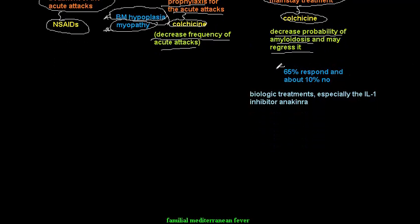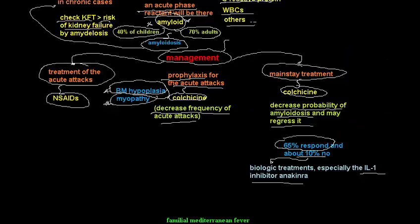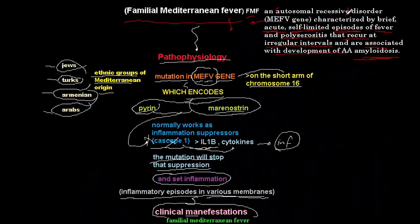About 65% of FMF cases respond to colchicine, but 10% will not respond. For those cases, we use biological treatment such as an interleukin-1 inhibitor, which is the second-line treatment after colchicine failure. That concludes the overview of FMF — its definition, pathophysiology, clinical manifestations, diagnosis, and management.